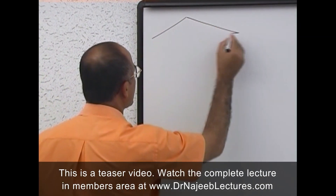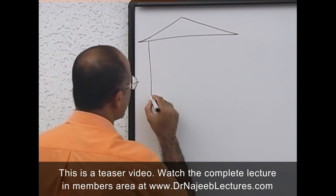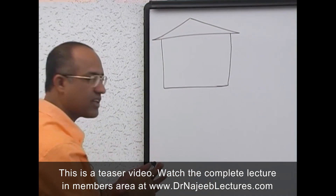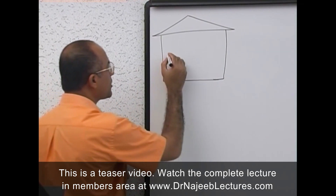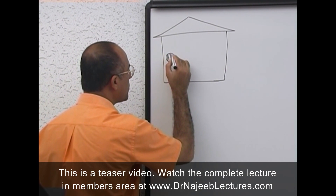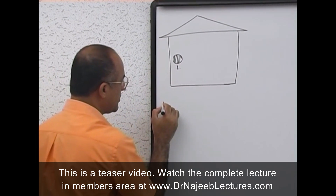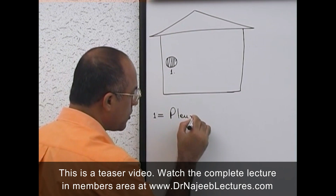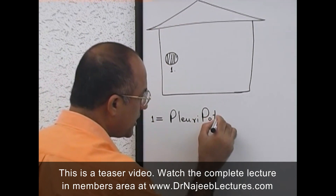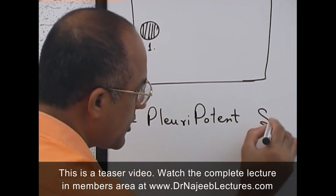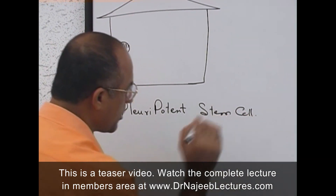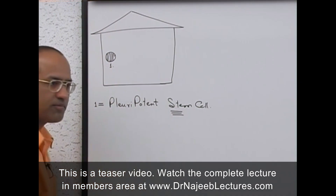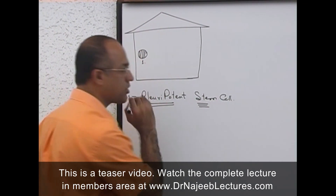Now let's concentrate on the bone marrow in an adult. In the bone marrow there are special cells concerned with the formation of blood cells. Cell number one is called the pluripotent stem cell. Before moving into the lecture, I want my students to have a clear concept of what a stem cell is, and what is meant by pluripotent.